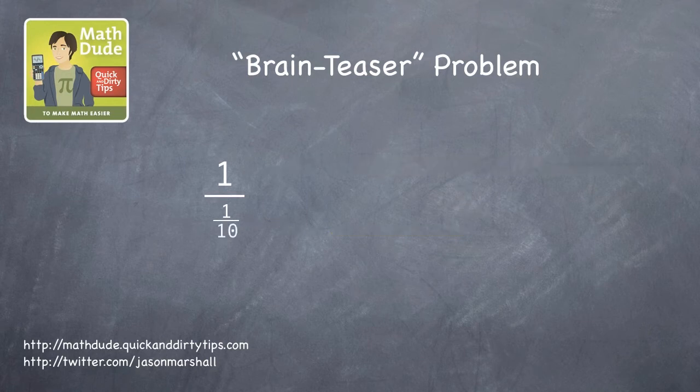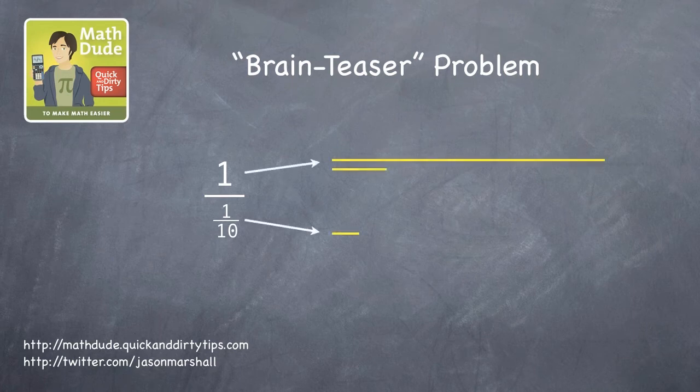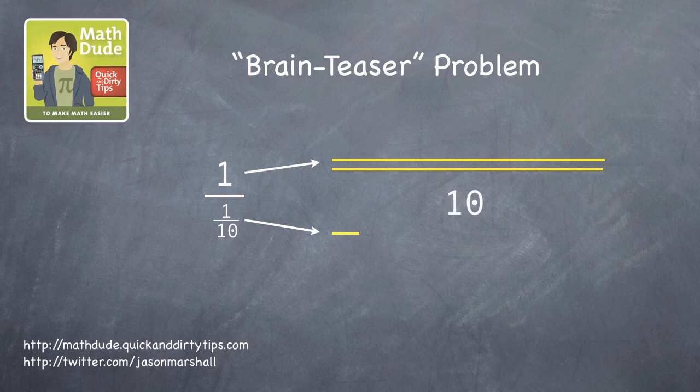Okay, how about 1 tenth in the denominator? 1 tenth goes into 1, 1, 2, 3, 4, 5, 6, 7, 8, 9, 10 times. So the answer is 10.